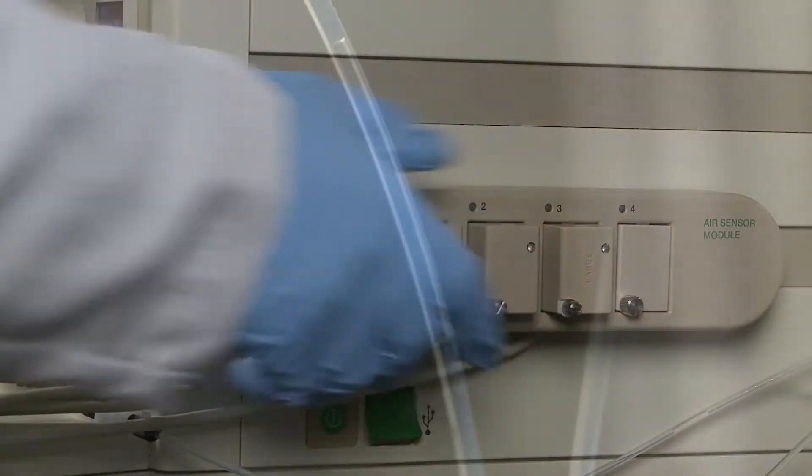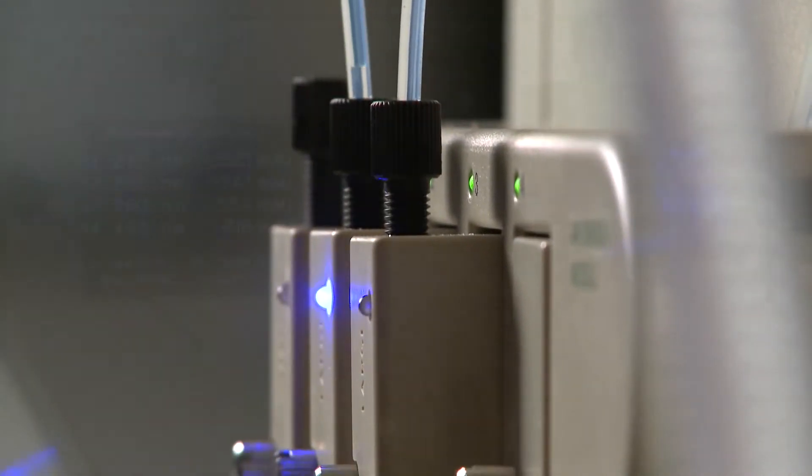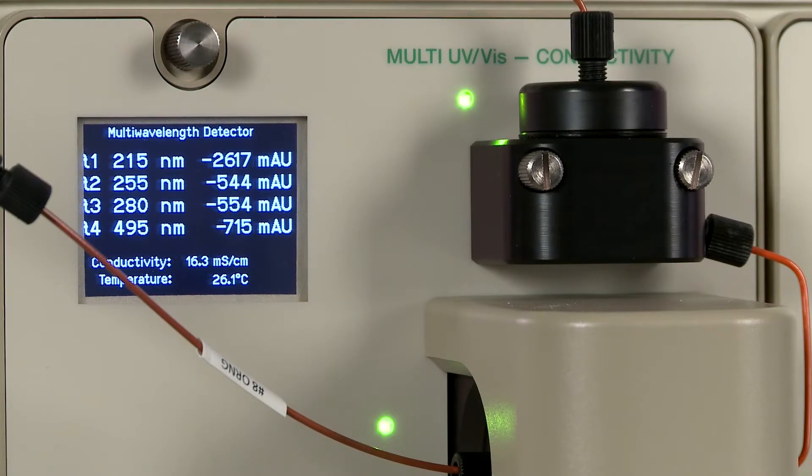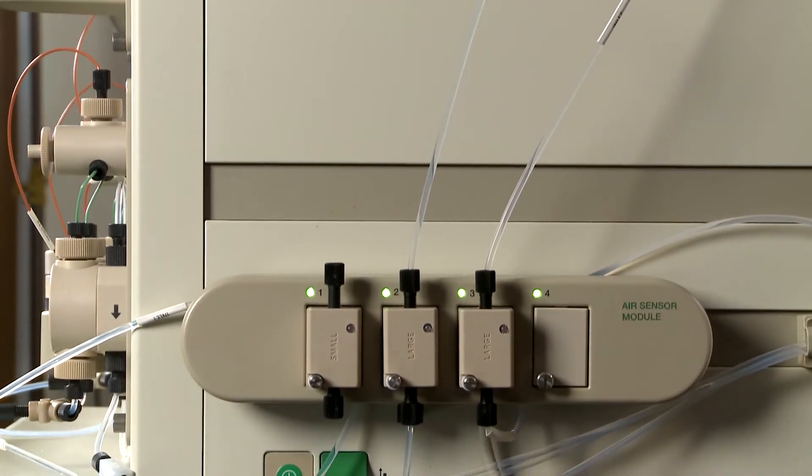Installing an air sensor module on your NGC will allow the system to automatically detect an end of buffer or end of sample event and then stop the sample pump or proceed to the next program step, preventing the introduction of air into the system. When running chromatography applications, the introduction of air into your buffer lines can result in damage to a column and loss of precious sample.